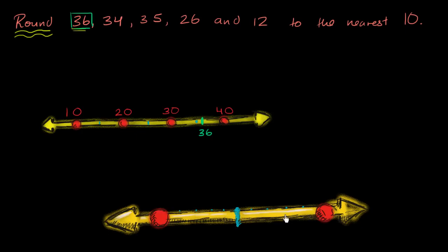So 36 is going to be a little higher than that — right over here. And if we zoom in between 30 and 40, with 30 on one end and 40 on the other, 35 is in the middle. 36 is one notch above that, right over here.